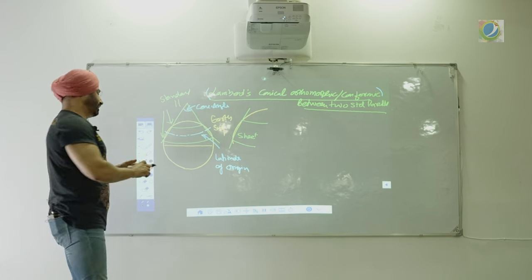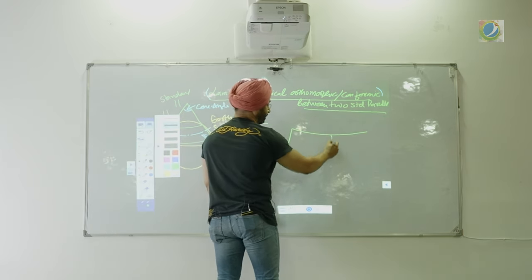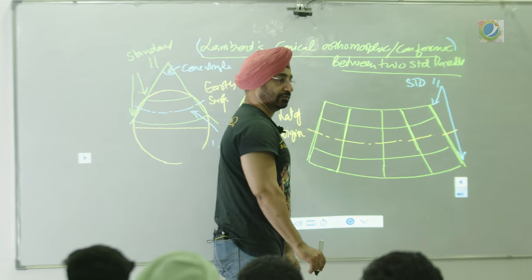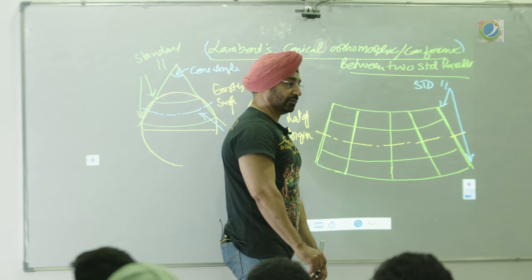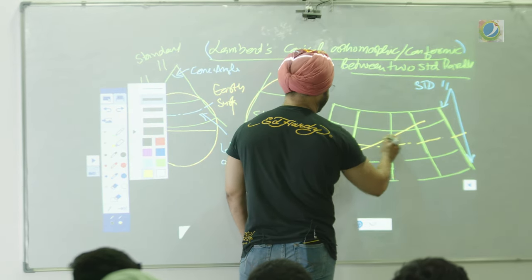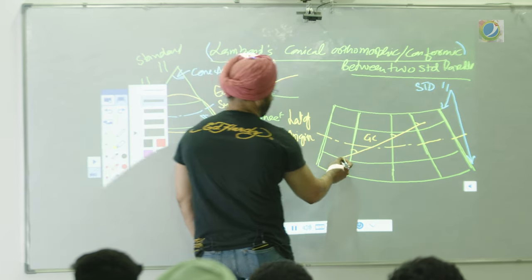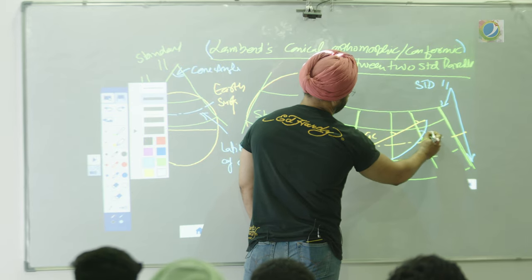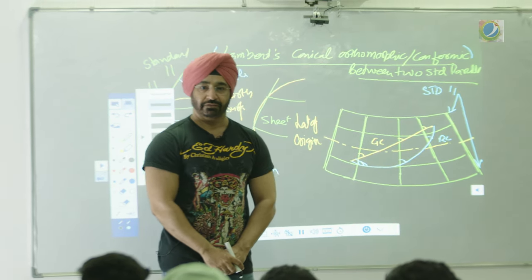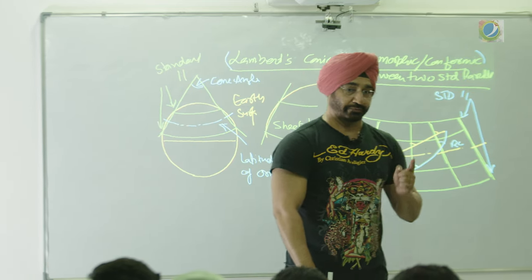Between the two standard parallels, the scale is correct in all directions and we can use it for navigation. The appearance is exactly like what we studied in conical projection. A straight line on this chart is a great circle — it is not cutting all meridians at equal angle. The curved line is your rhumb line. It is a non-perspective projection because the sheet is brought inside mathematically.